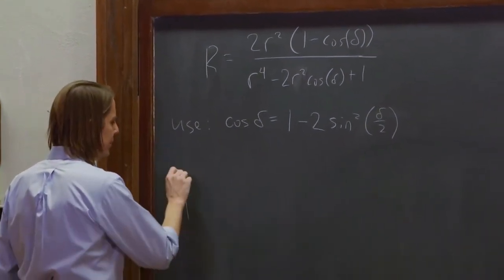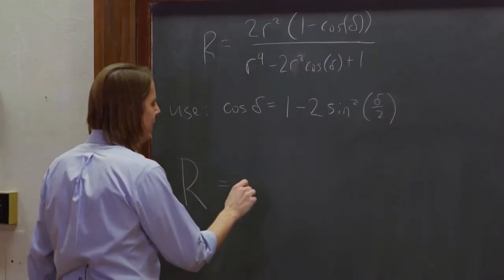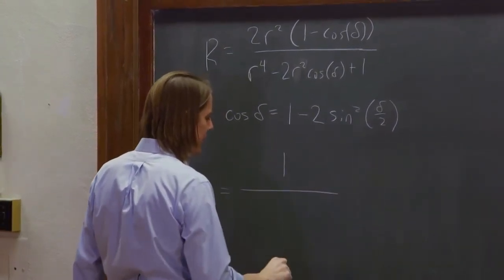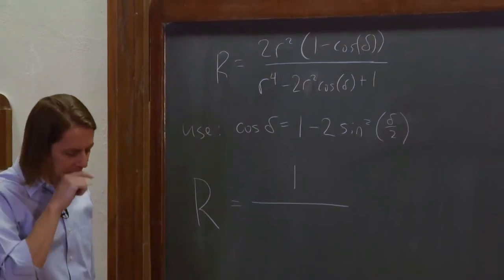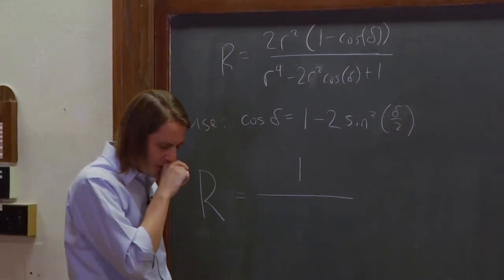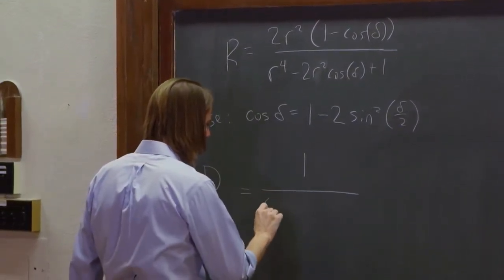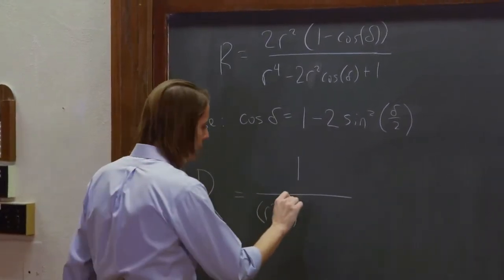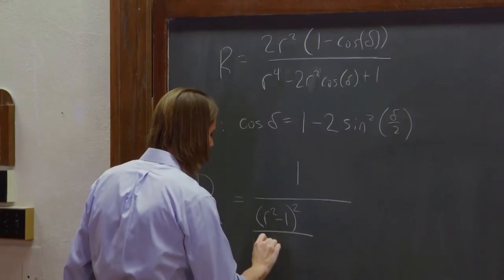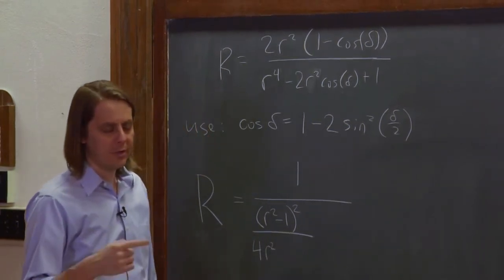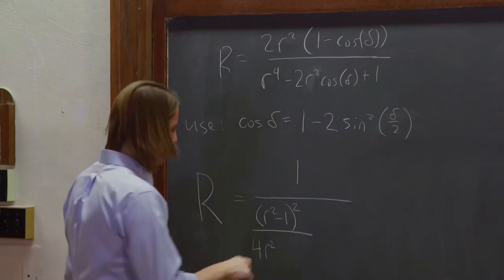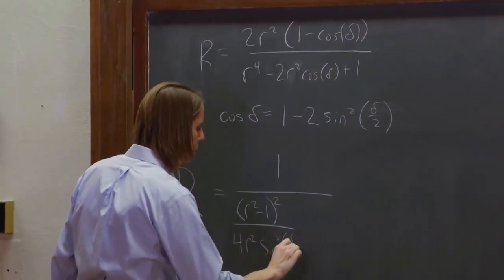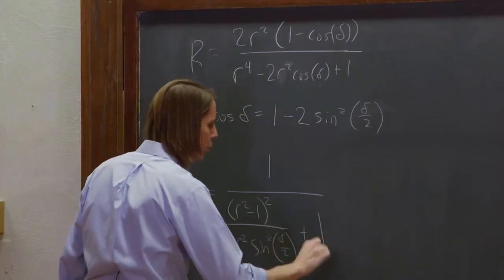You can actually get it to a form that looks like this. And to see intuitively what happens in cases like this, it's always good to get it with as many 1s as you can. So you can get it down to 1 over [(R² - 1)²/(4R² sin²(δ/2)) + 1].